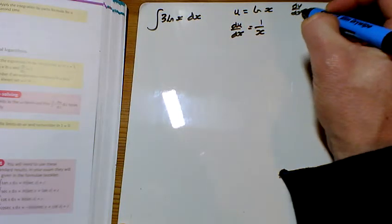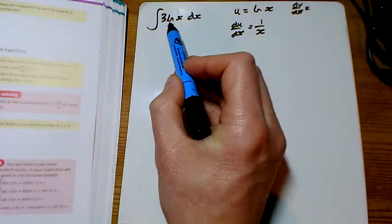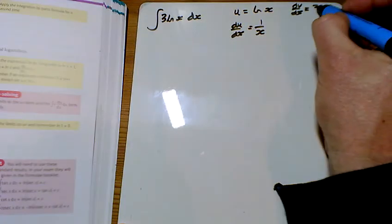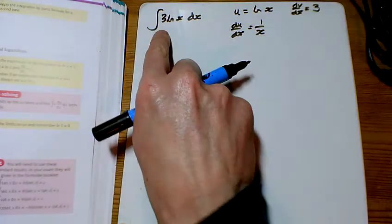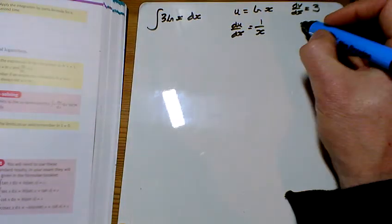And you let dv by dx be the other bit. Now, here, what do you think? It's just a 3. When you just have 1 ln x here, people never know what to put.